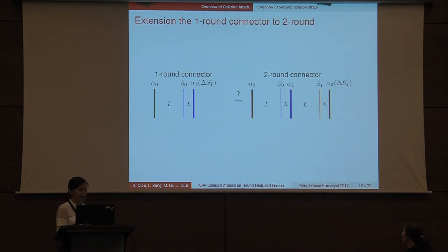Our idea is to extend this one-round connector to a two-round one. And the hard core of this extension is that there is a nonlinear layer chi in the first round. We tackle this problem based on some more properties of S-box.